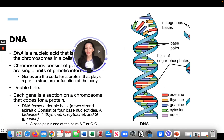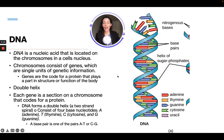DNA is a nucleic acid that is located on the chromosomes in a cell's nucleus. Chromosomes consist of genes, which are single units of genetic information. Genes are the code for protein that plays a part in the structure or function of the body. Each gene is a section on a chromosome that codes for a protein.